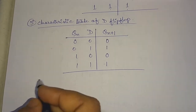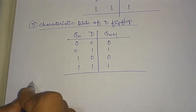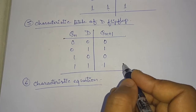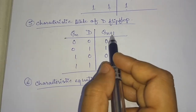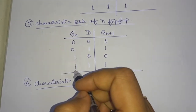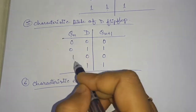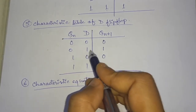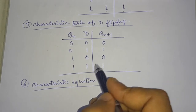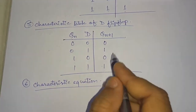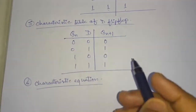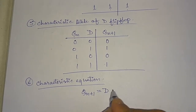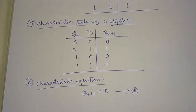From the characteristic table we can derive the characteristic equation. We need not draw a Karnaugh map because we can directly see that Qn+1 is not dependent on the present state Qn. When D is zero, Qn+1 is zero; when D is one, Qn+1 is one. Therefore we can directly write: Qn+1 = D. This is the characteristic equation of the D flip-flop.